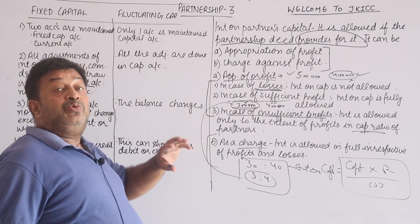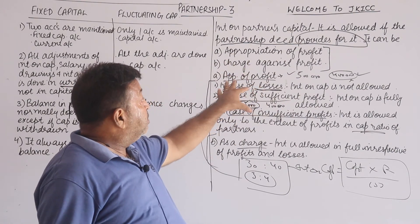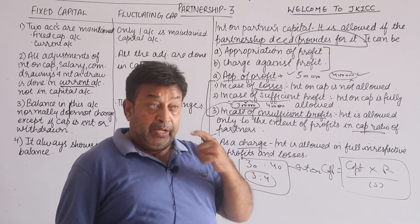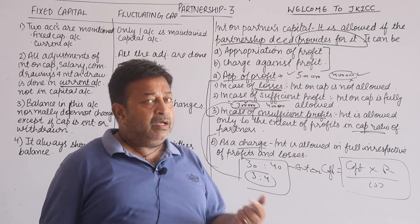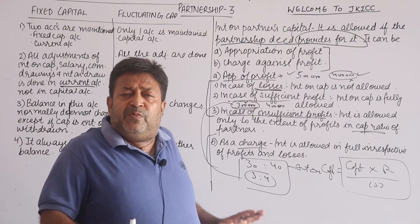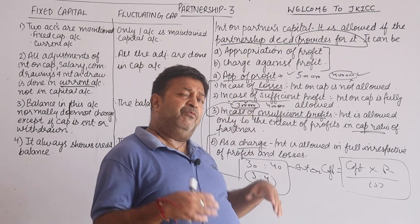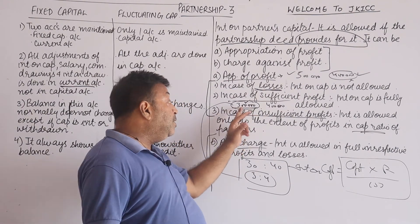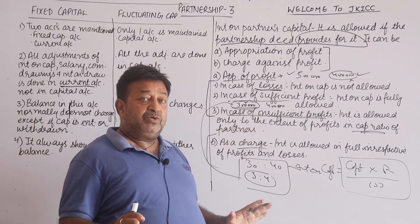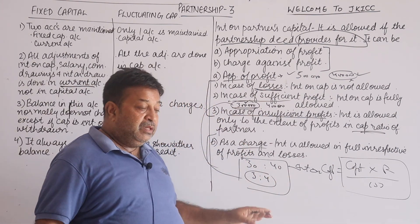So these were two important aspects. In capital accounts: what is fixed and what is fluctuating. And then it is very important that interest on capital must be mentioned in the partnership deed. It should also be mentioned whether it is an appropriation or a charge. Under appropriation, if there is a loss, interest is not allowed; if profits are sufficient, full interest is given; if profits are insufficient, it is distributed in capital ratio. The charge is simple — interest is always paid regardless.